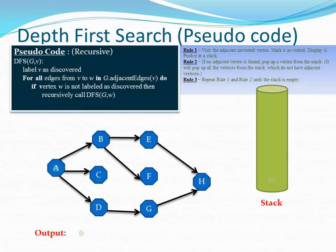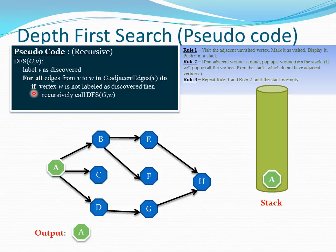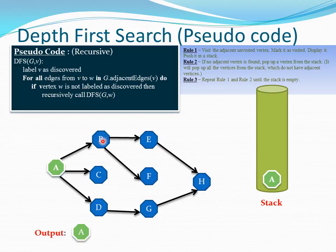Let us trace this code with our example. First we choose A as our starting node, label V as discovered, and mark A as visited. Then we iterate for all adjacent edges of V — we iterate over A's children. The first iteration visits B. We check: if vertex W is not labeled as discovered, we call DFS again. This is where rule one is applied — if not discovered, we call the function recursively.